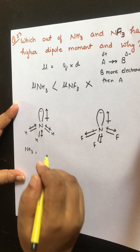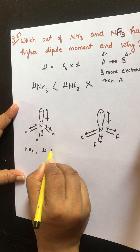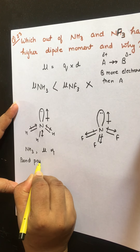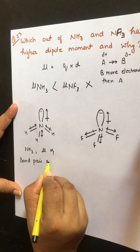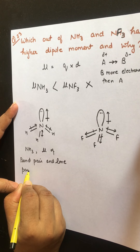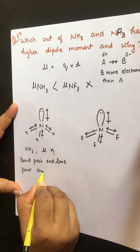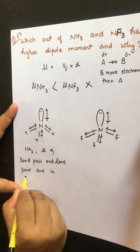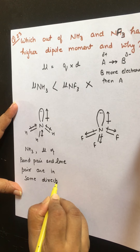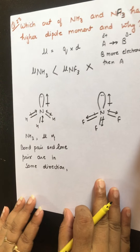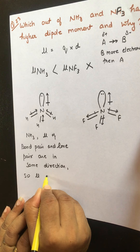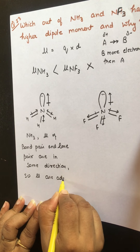Now comparing the two: dipole is a vector quantity. In the case of NH₃, the dipole due to the bond pair and the dipole due to the lone pair are in the same direction. Because it is a vector quantity, the dipoles are added up.